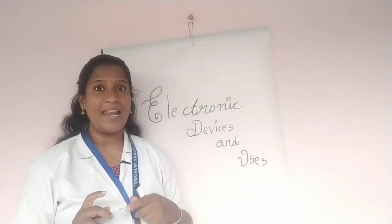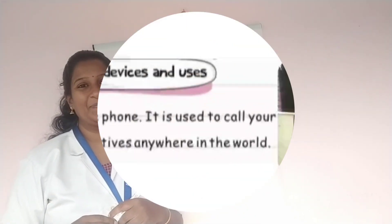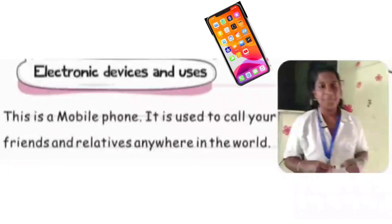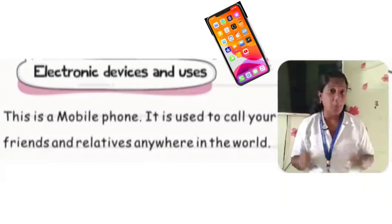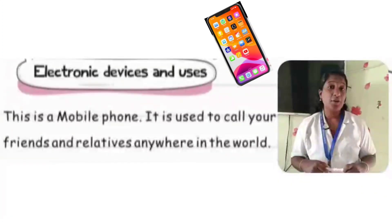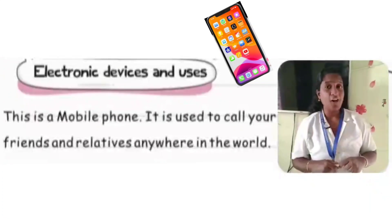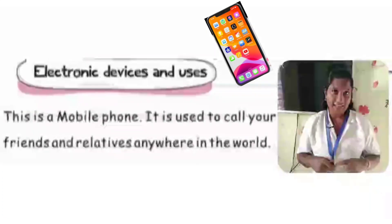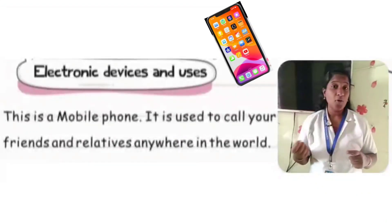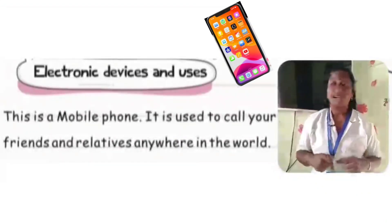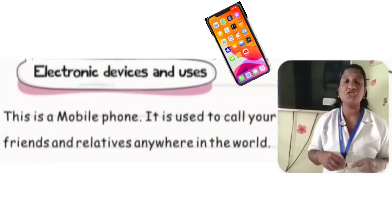I will show some pictures and teach you their uses. Let's move on — mobile phones! The first electronic device we are going to study is a mobile phone. We use mobile phones to make calls to our friends and relatives. Nowadays you are using mobile phones for doing your online studies also. So the main use of a mobile phone is to call our friends and relatives.